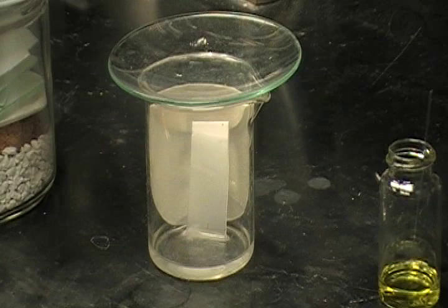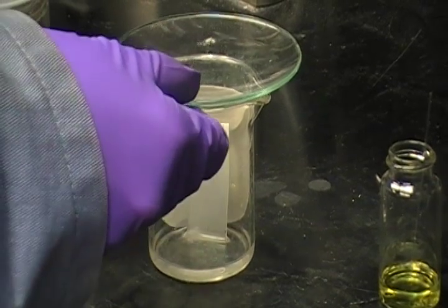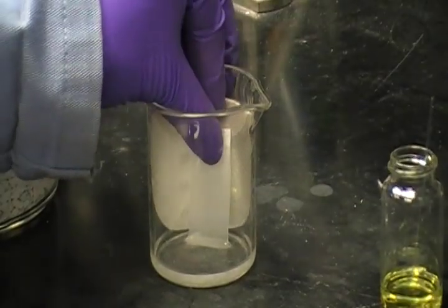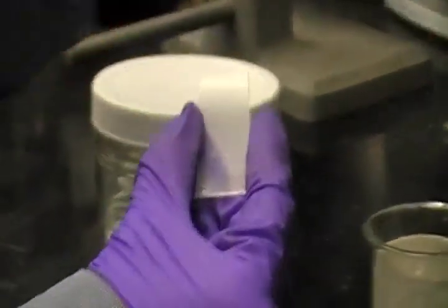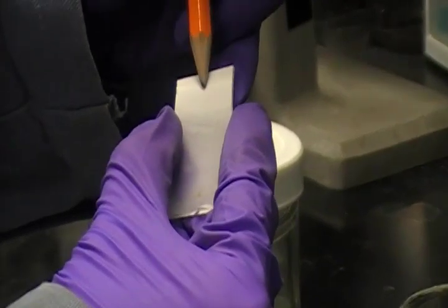Always keep track of the progress of the TLC plate to make sure that the solvent doesn't run off the plate. We must remove the TLC plate from the jar before it wets the whole plate and carefully mark the solvent front with a pencil.